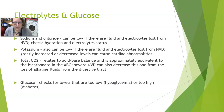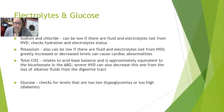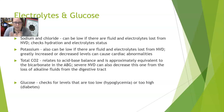Total CO2 is sometimes listed as bicarbonate and relates to acid-base balance. It is approximately equivalent to the bicarbonate on an arterial blood gas. Severe nausea, vomiting, and diarrhea can decrease this value through loss of alkaline fluids from the digestive tract. Other causes of shifts in bicarb include metabolic acidosis and acid-base imbalances, while increases can be seen in COPD and other conditions.